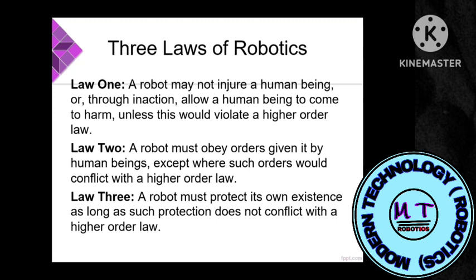If you are making any machine or designing anything, you should make sure it does not injure or attack a human being. Law Two: a robot must obey orders given to it by human beings, except where such orders would conflict with a higher-order law.